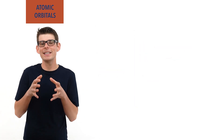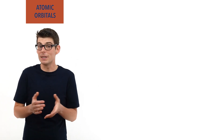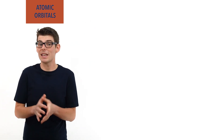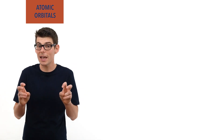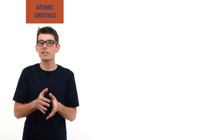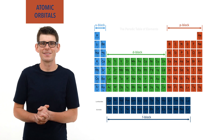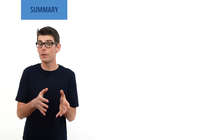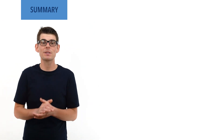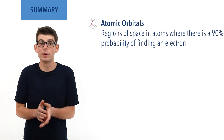It is the electrons in the outermost orbitals of atoms that determine how they react. This means elements with outermost electrons in the same type of subshell have similar properties, and are grouped together in the periodic table, giving S block elements, P block elements, D block elements, and F block elements. So to summarize: atomic orbitals are regions of space within an atom where, if occupied, there is a 90% probability of finding an electron.